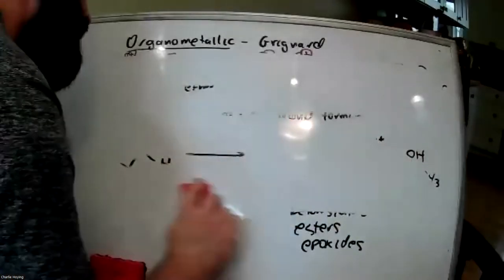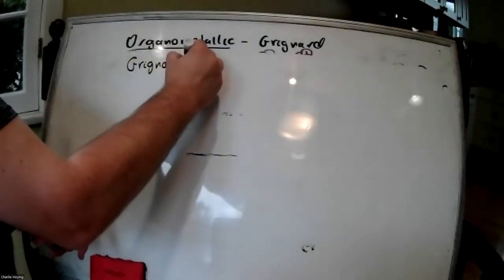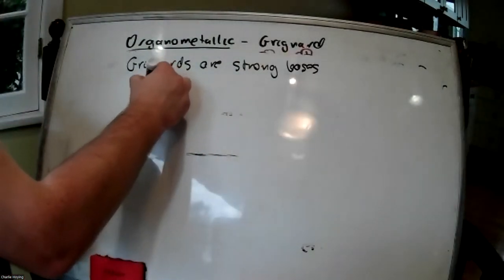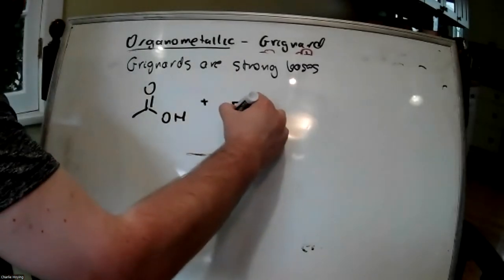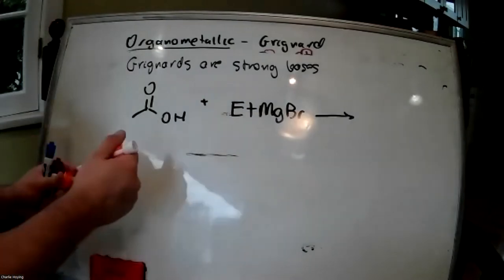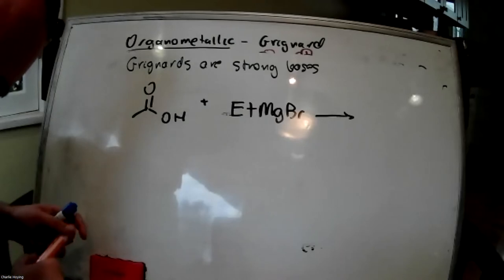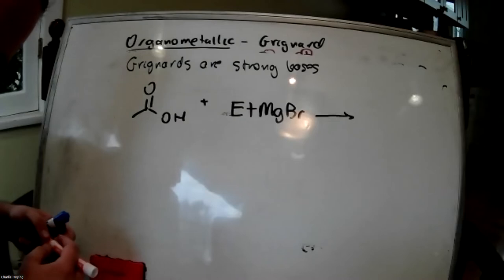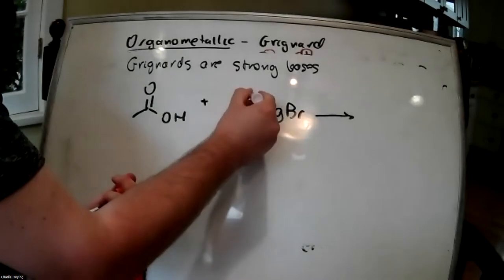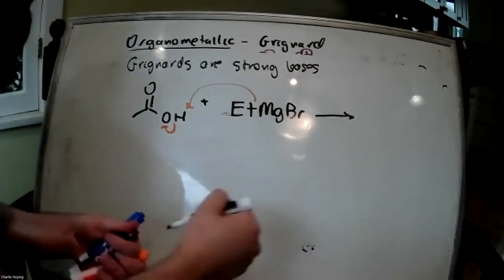Grignard reagents are also strong bases. For instance, if we tried to react acetic acid with ethyl magnesium bromide — what is faster, a nucleophilic attack or an acid-base reaction? An acid-base reaction is faster than a nucleophilic attack, because in the Bronsted-Lowry definition it's simply a proton transfer. So the acid-base reaction will happen faster than the nucleophilic attack.